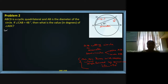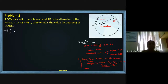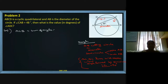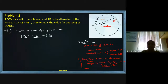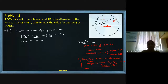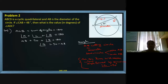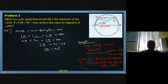Now coming to the actual solution. ACB is a triangle and the sum of angles in a triangle equals 180 degrees. Angle A is 48°, angle C is 90°. We need to find angle B. So angle B equals 180 minus 90 minus 48, which gives angle B equal to 42 degrees.